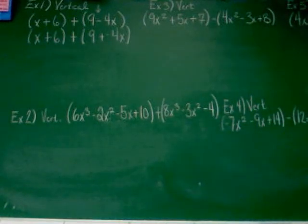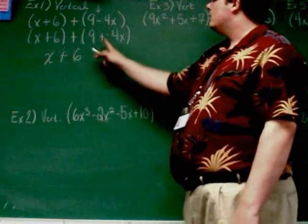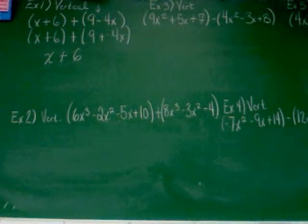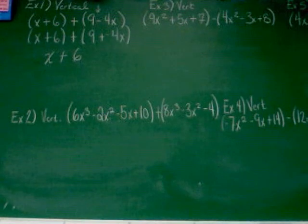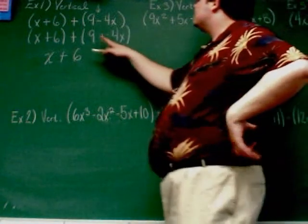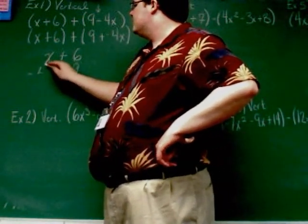Step three: align the like terms vertically. I write x plus six on top. Now for nine plus negative four x, I need to line up like terms — x terms with x terms, constants with constants. You can't combine unlike terms. So I put the nine under the six and the negative four x goes under the x.